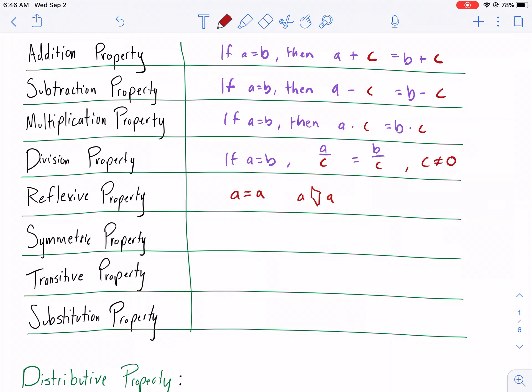Symmetric property, very similar. If we have A equals B in one scenario, then B equals A. If you switch it around, it's still equal. That's what this one's about. This one's like, if you switch it around, it's still equal.